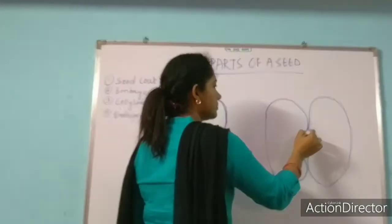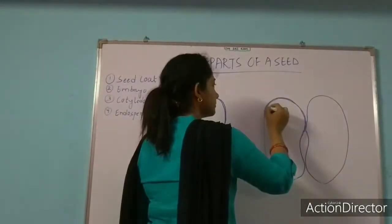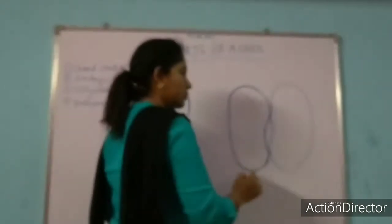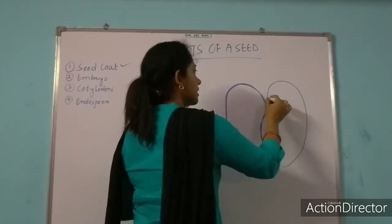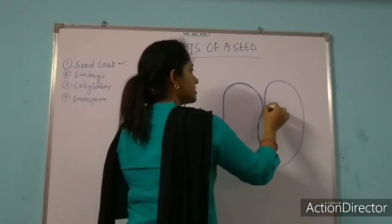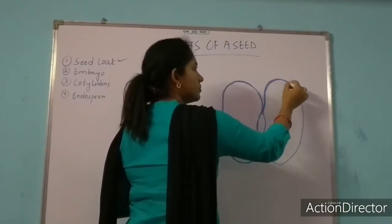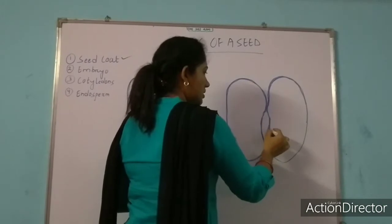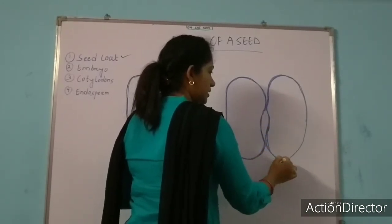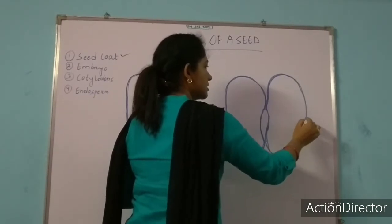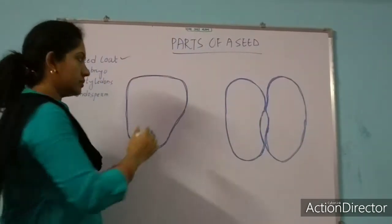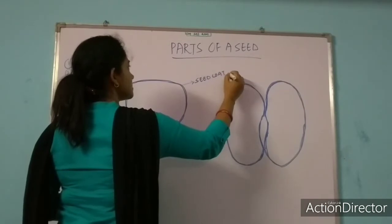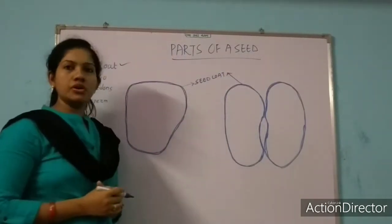The seed coat is present for both monocot and dicot seeds. In our practical class we will have a dissection of the seed, just as we did the dissection of the fruit. There I will show you all the parts of the seed. So seed coat is the outer covering, present in both monocot and dicot.